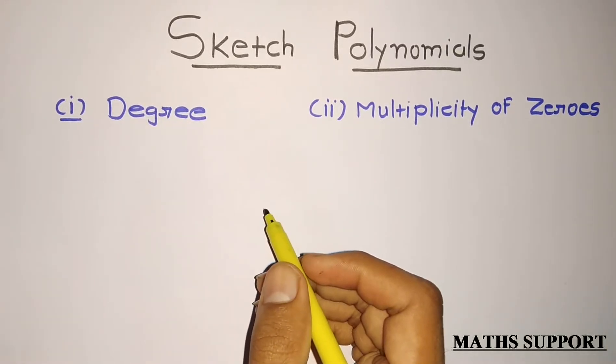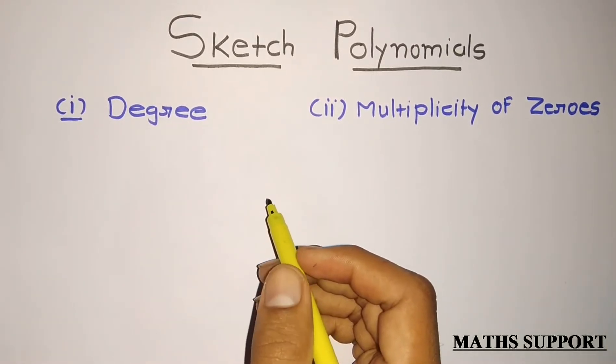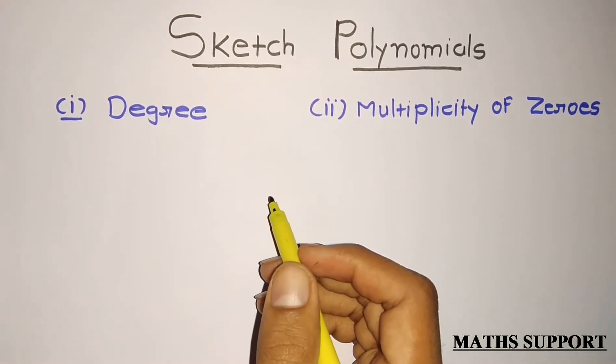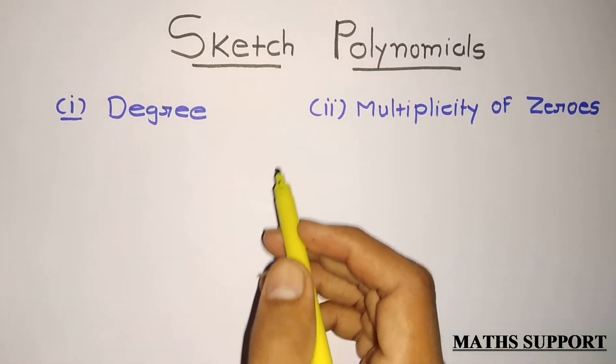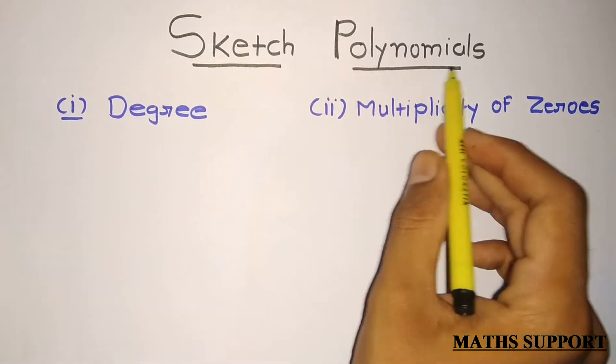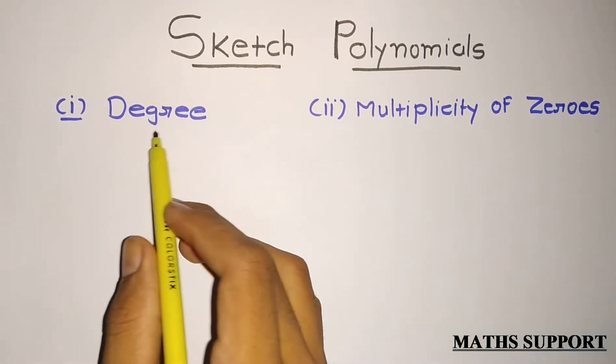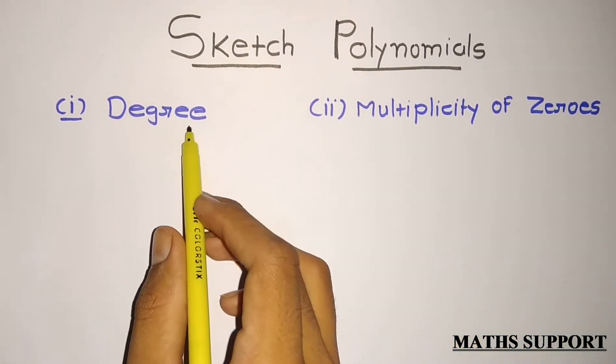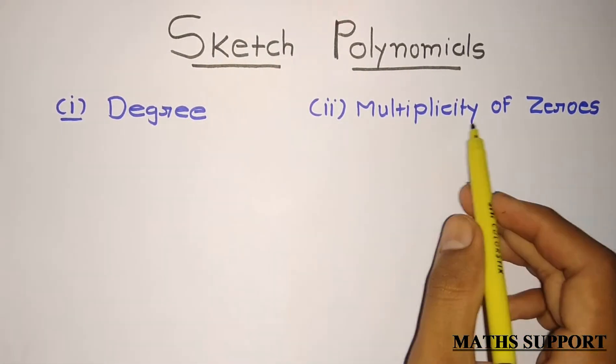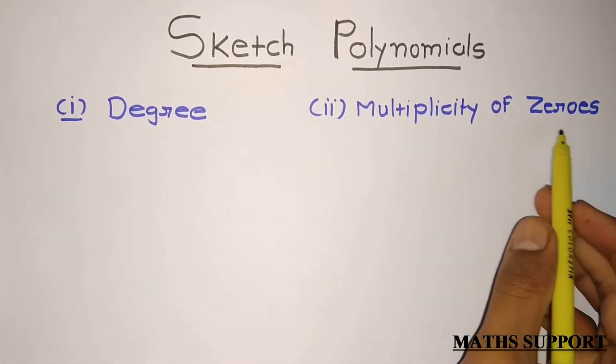Hi guys, welcome to math support. In this episode, we are going to discuss how to sketch any polynomial with two pieces of information: degree and multiplicity of zeros.